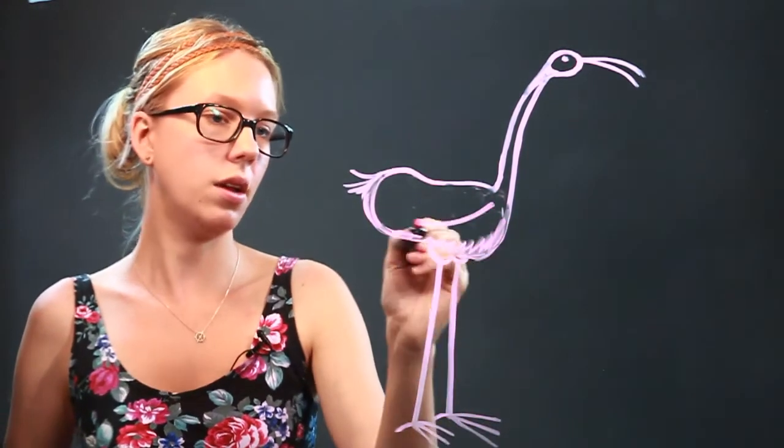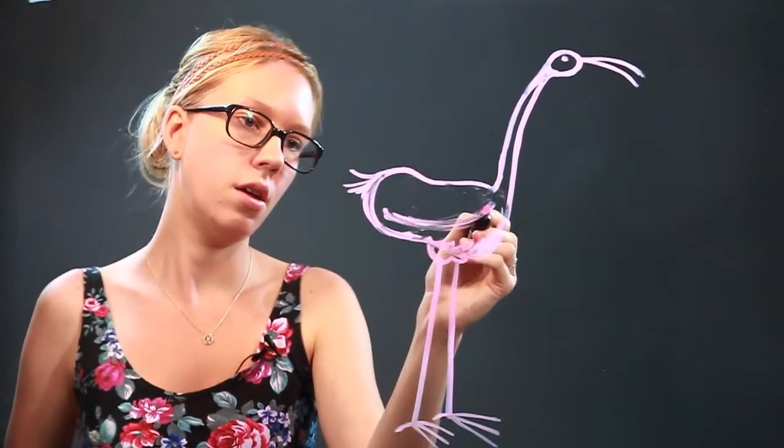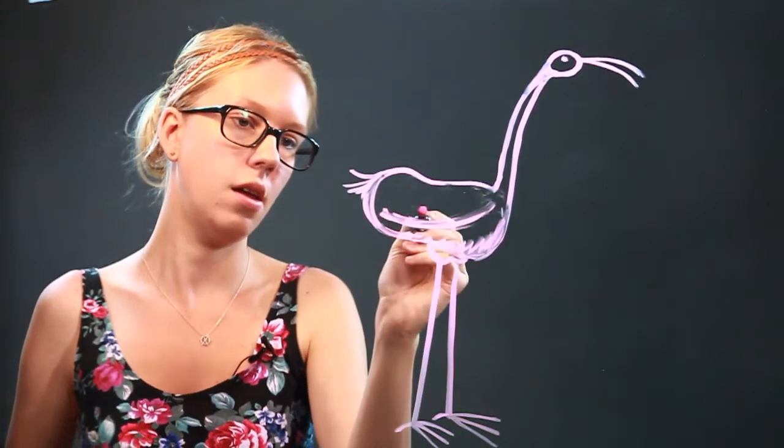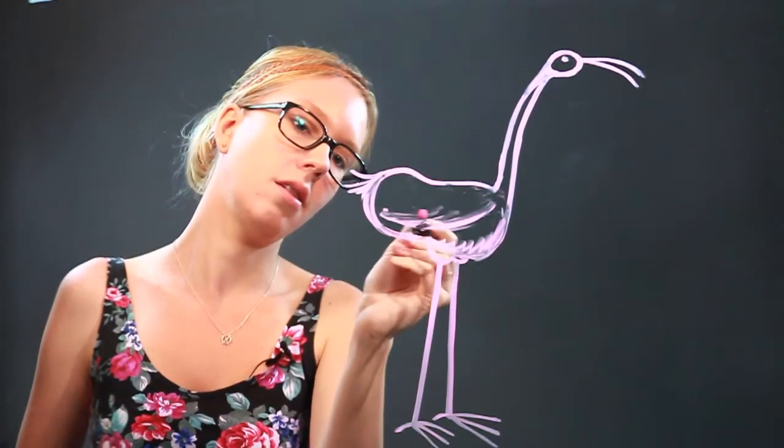If you want to make it look like it's got wings, just draw the line right through here. You can draw a couple little lines for feathers.